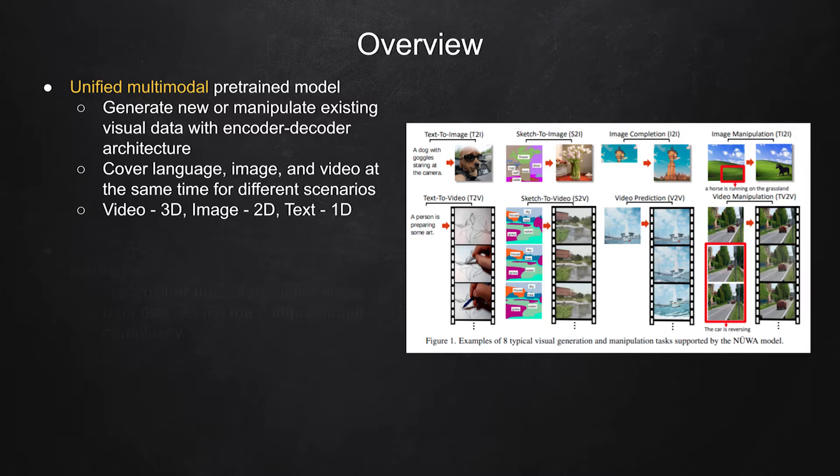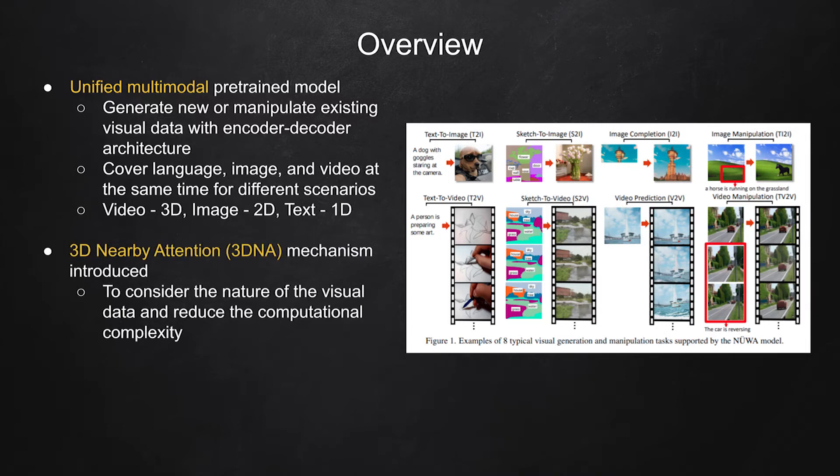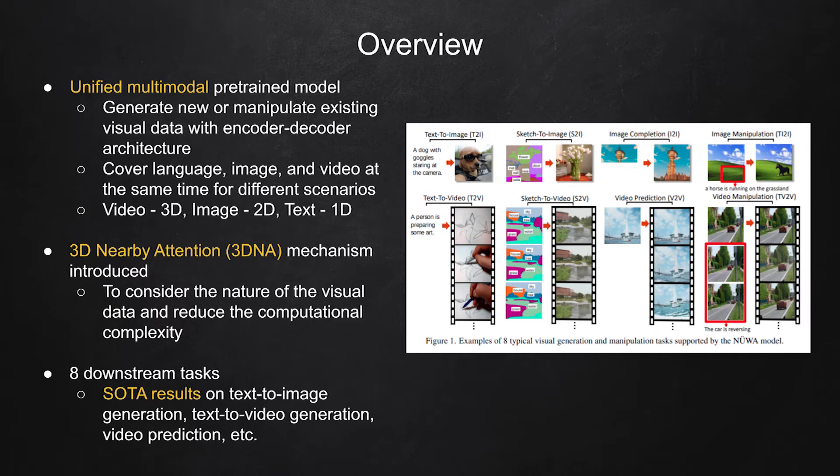A 3D nearby attention mechanism called 3DNA is proposed to reduce computational complexity. The model is evaluated on 8 downstream tasks. It achieves state-of-the-art results on text-to-image generation, text-to-video generation, and video prediction tasks.